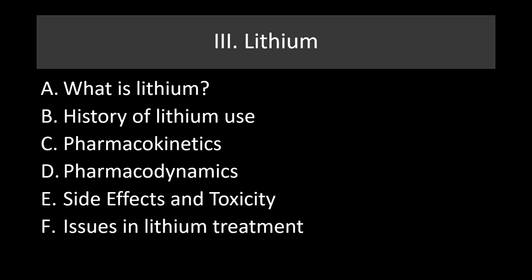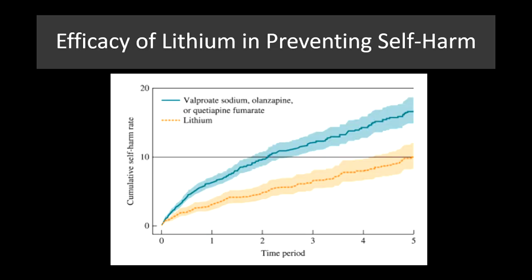The last section of this lecture covers lithium — its history of use, pharmacokinetics, pharmacodynamics, side effects and toxicity, and issues in lithium treatment. Looking at self-harm prevention, lithium is very effective: the rate of cumulative self-harm is dramatically reduced for lithium compared to valproate, olanzapine, or quetiapine. So we often compare other drugs to the efficacy of lithium.